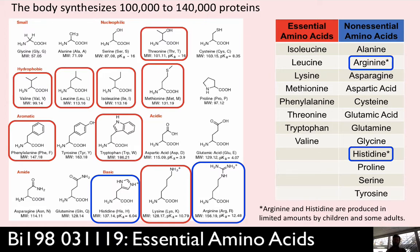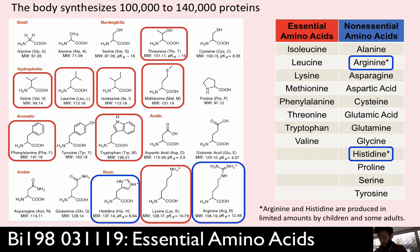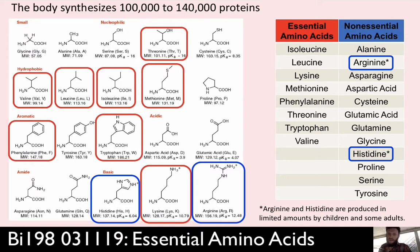Today we're going to finish up with proteins, talking about the 20 amino acids and which of them are essential and which are non-essential. Non-essential amino acids are amino acids that can be synthesized by the body. Your body can make any of the non-essential amino acids — there are 12 of them, sometimes people say 10.